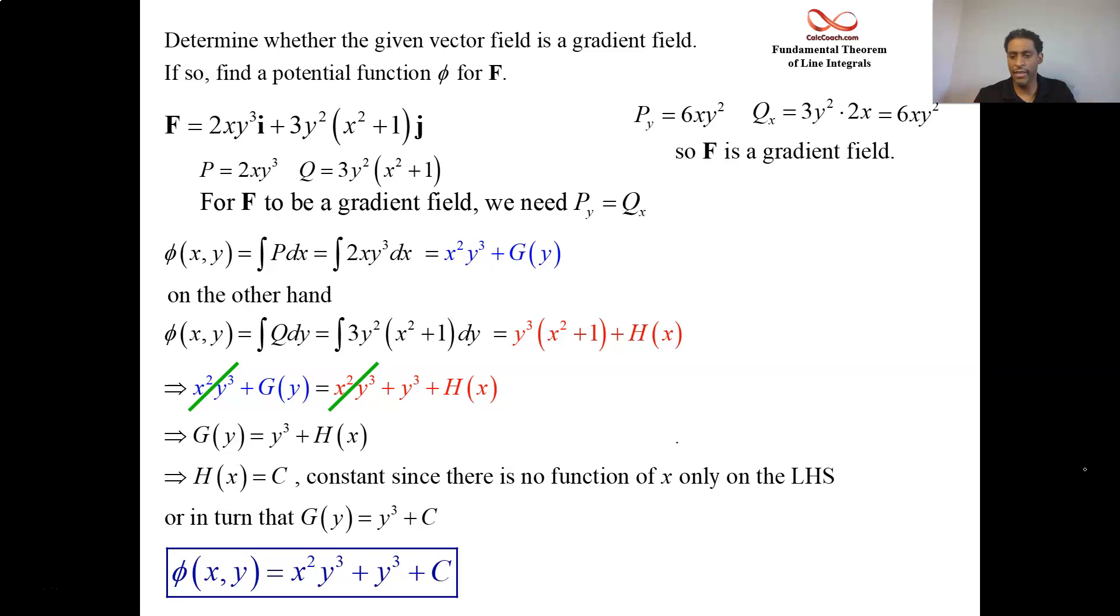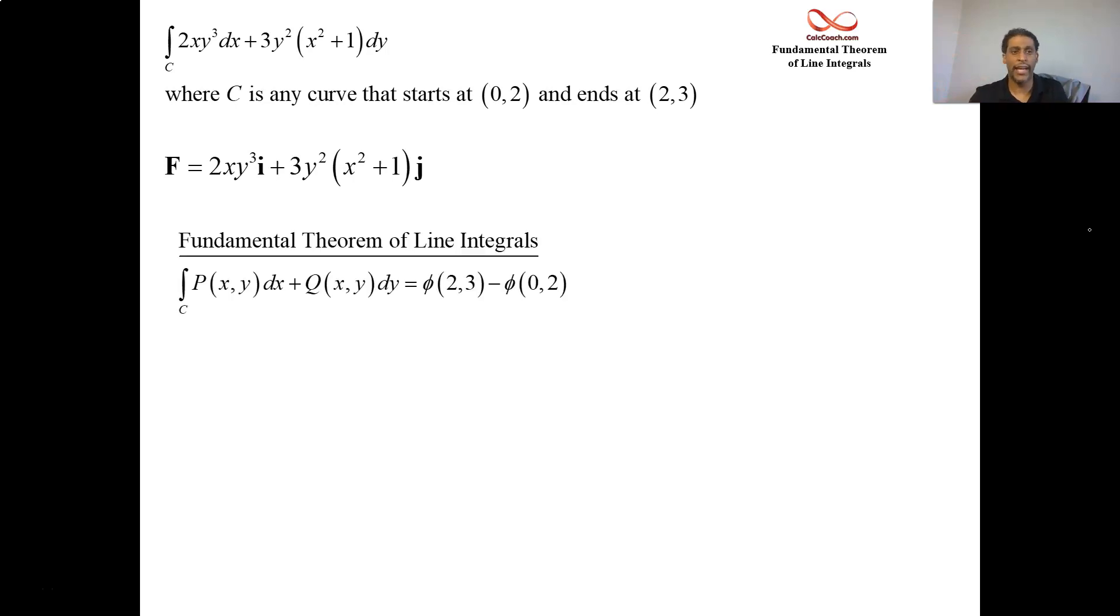And then what do we do with this? Why do we care about this? Well, what happens is that we can take this and use it to be able to evaluate a line integral. If my line integral involves that same particular vector field, and I'm independent of path, I don't care which path I take, any curve that goes between those two points, then what I can do is go find out what that function is, and I can evaluate the function.